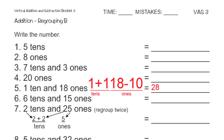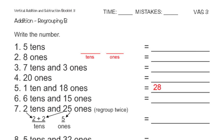Moving on to number 7, I have two tens and 25 ones. You're actually going to need to regroup twice. 25 ones — obviously that's more than 10. How many tens could I put into 25 without going over? 2. If I took away two tens, which would be 20, from the 25, I would be left with five ones.